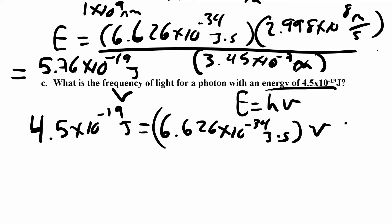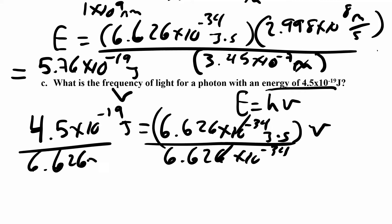That's the 6.626 times 10 to the negative 34 joules times seconds. And our frequency is what we're looking for. So I'm going to divide that by 6.626 times 10 to the negative 34 joules times seconds. My joules cancel.